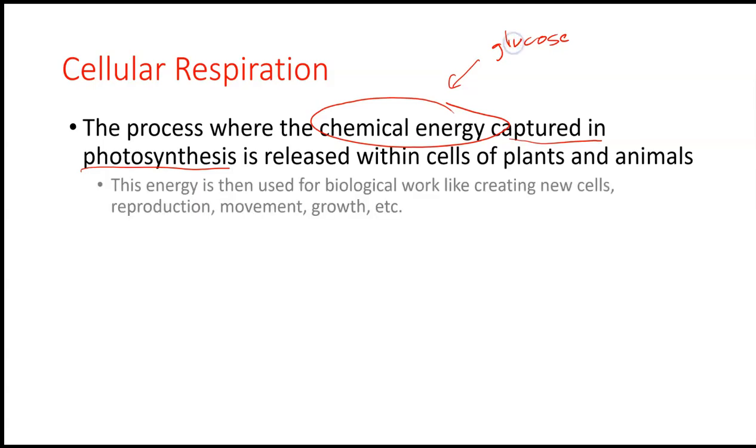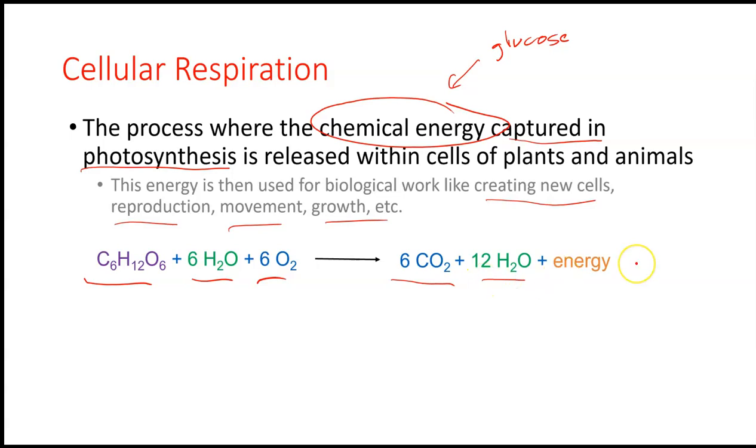Whatever's left over inside the plant can then become food for other organisms. So that energy is used for biological processes, creating new cells, reproduction, movement, growth, etc. But that chemical energy came originally again from sunlight. It just was used to build these molecules that store that energy for us, and then we can eat that food and access that energy. So glucose, water, and oxygen, you notice, is what is created from photosynthesis, is the inputs of cellular respiration. And we get carbon dioxide, water, and some energy out of the process.